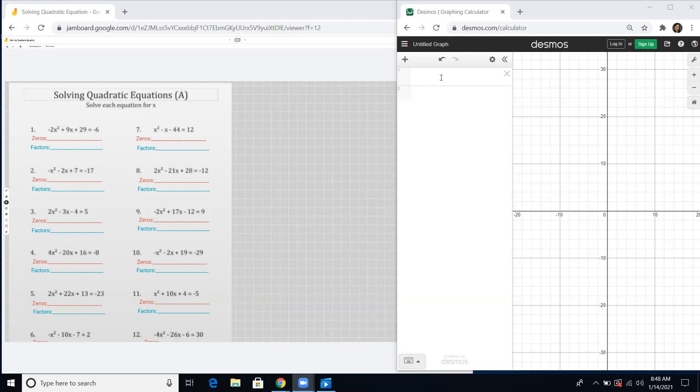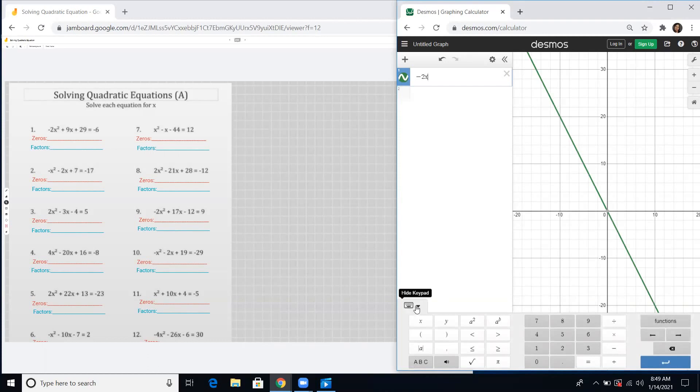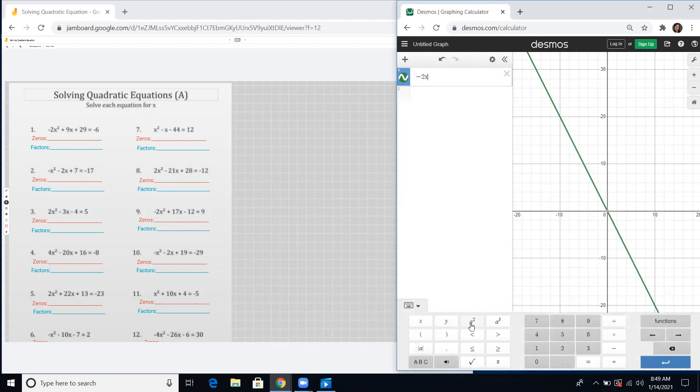Let's start with number one, negative 2x. There is a keypad here, you may hide it or show it, but I frequently show it because I'm using the square button since there is no square on the keyboard or keypad on the laptop I'm using right now. We have negative 2x squared, just click this square, plus 9x plus 29 equals negative 6.